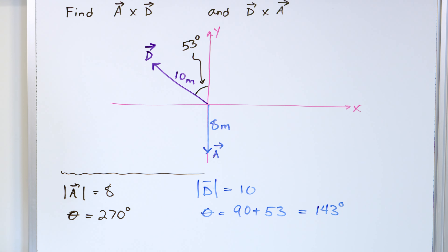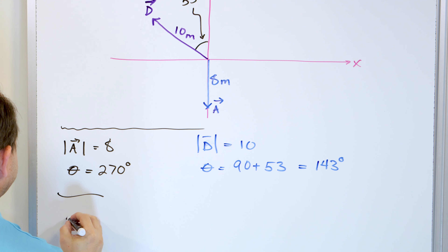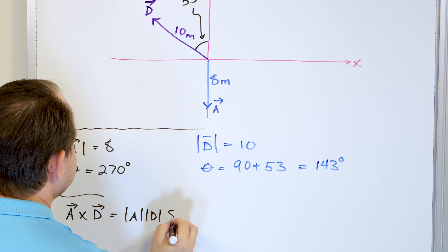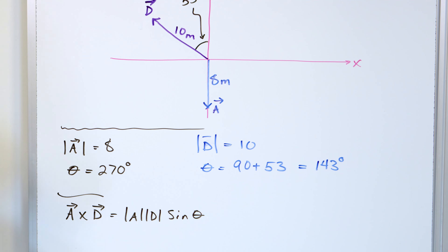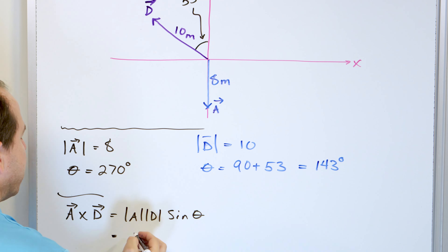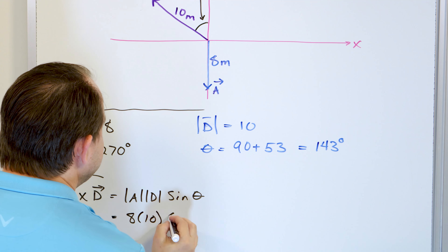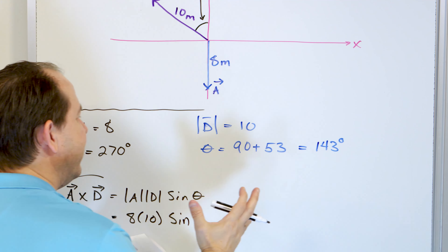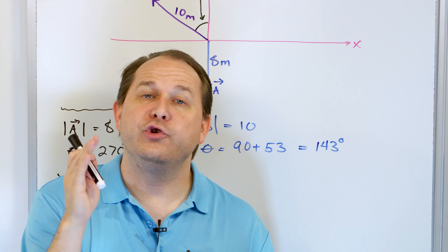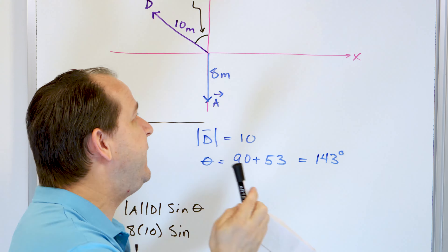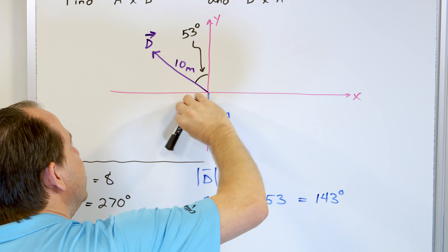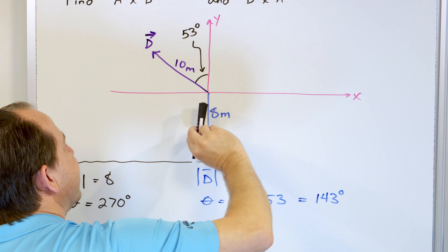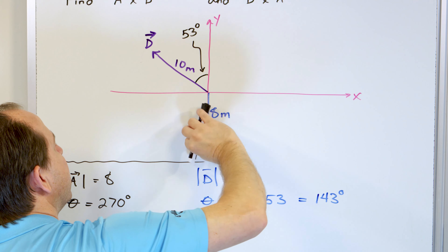To find the cross product, vector A crossed with vector D equals the magnitude of A times the magnitude of D times the sine of the angle between them. Magnitude of A is 8, magnitude of D is 10. For the cross product, you use the smallest angle between the vectors. We know A is at 270 degrees and D is at 143 degrees. Subtracting: 270 minus 143 gives us 127 degrees — that's the angle between them that we'll use.